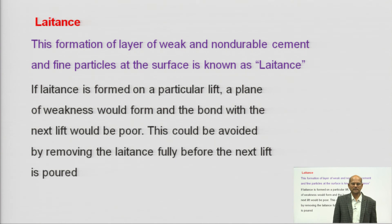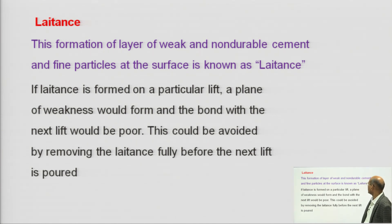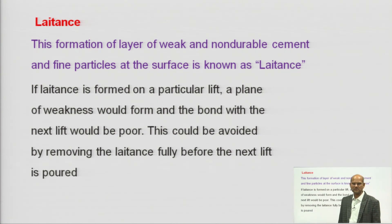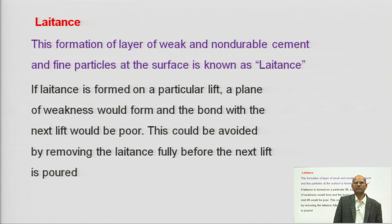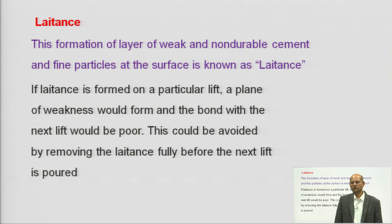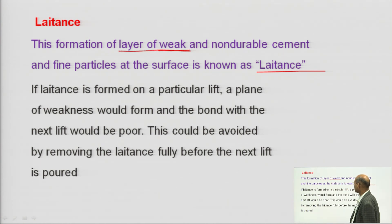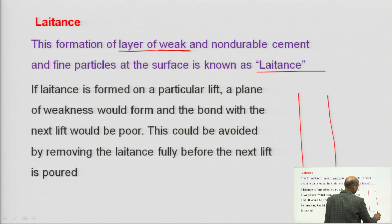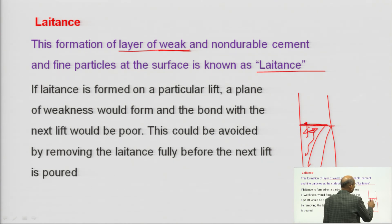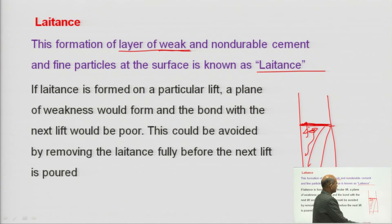Another terminology is latence. The formation of a layer of weak and non-durable cement and fine particles at the surface is known as latence. Because concrete is cast in different lifts, due to bleeding the finer particles of cement and fine aggregate come to the top of each lift and form a weaker joint. Latence is nothing but a weaker joint or weaker layer at the lift surface.